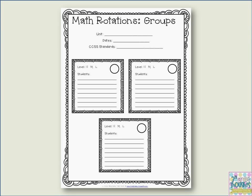This is the groups planning page, which is included in the planning packet you'll be able to find on my blog post. All I do is fill in the unit, the dates it'll be running, and the standards we're going to hit from Common Core. Then there are three boxes because I do three rotations — HML standing for high, medium, low — and I just list the students. The circle on the right-hand side is where I put a color. I organize my groups by colors: red, blue, green, yellow — any three colors you'd like.